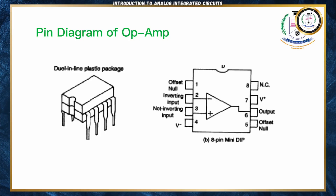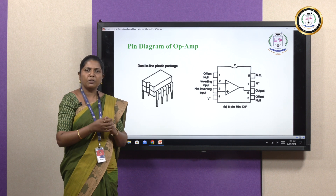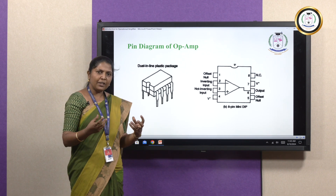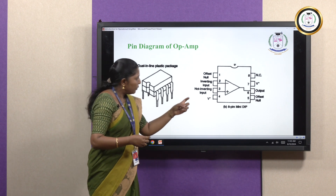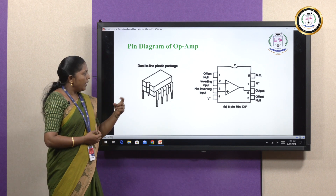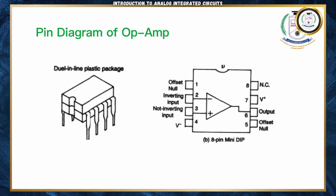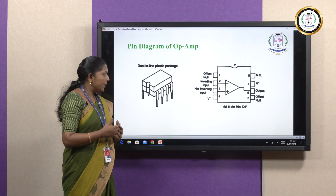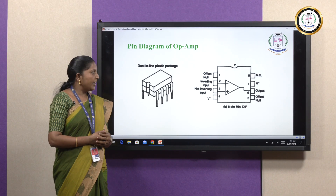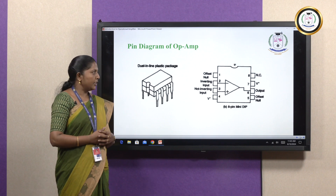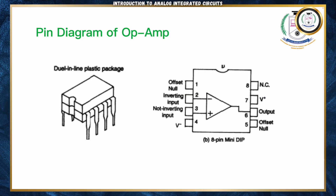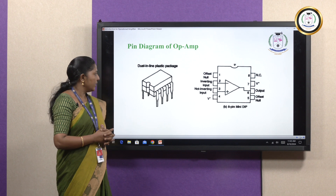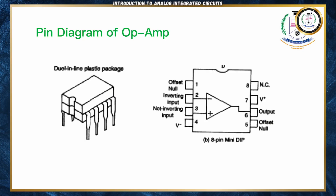This is the pin diagram of our operational amplifier. Normally it is available in eight pins. Pin numbers two and three are the input pins — it has two inputs and one output, because for any mathematical operation we need at least two inputs. The two inputs are the inverting input and non-inverting input. Pin numbers one and five are offset null. Pin number two is the inverting input, pin number three is the non-inverting input, and pin number six is the output. We need to give power supply to this IC via pin number four and pin number seven. Pin number seven is the positive power supply, pin number four is the negative power supply, and pin eight is no connection.